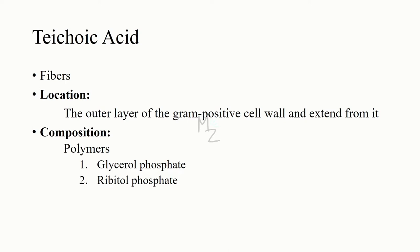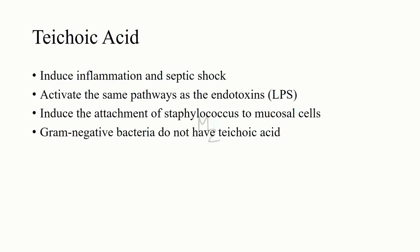Teichoic acids are fibers located in the outer layer of the gram-positive cell wall and extend from it. They are composed of polymers of either glycerol phosphate or ribitol phosphate. Some teichoic acid polymers penetrate the peptidoglycan layer and are covalently linked to the lipid in the cytoplasmic membrane — in which case they are called lipoteichoic acids. Others are anchored to the muramic acid of the peptidoglycan. Teichoic acids can induce inflammation and septic shock, activating the same pathways as LPS does in gram-negative bacteria. They also mediate attachment of staphylococci to mucosal cells. Gram-negative bacteria do not have teichoic acids.